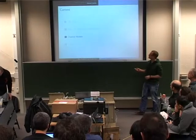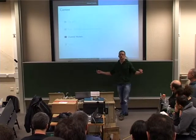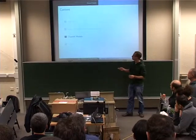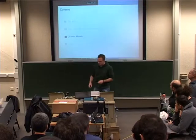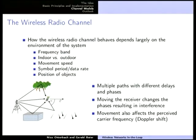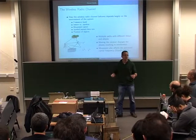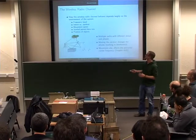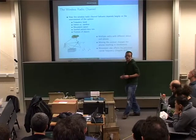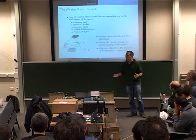Gerald will now talk about channel models. So far we've discussed the overall setup — how the system works with a centralized server and nodes that connect and exchange IQ samples — but we've completely disregarded channel models. Since most of you are computer science people, I'll give a quick introduction. The wireless channel behaves very differently depending on various factors: the frequency band — whether you're transmitting at 100 MHz or 2.4 GHz makes a big difference — and whether you're outdoors or indoors.